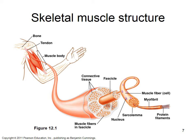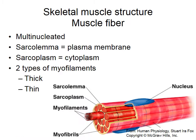Inside muscle fibers, we have myofibrils made up of sarcomeres end to end, which are made up of thick and thin filaments, which are made up of actin and myosin. We'll discuss how actin and myosin interact to cause muscle contraction. In a single muscle fiber, the blue things visible are the nuclei.